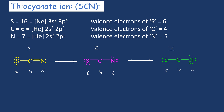Now let us assign the formal charges. For sulfur (reference: 6 valence electrons): canonical structure 1 gives 7, so −1; canonical structure 2 gives 6, so 0; canonical structure 3 gives 5, so +1. For carbon (reference: 4): all three canonical structures give 4, so the formal charge is 0 in all cases. For nitrogen (reference: 5): canonical structure 1 gives 5, so 0; canonical structure 2 gives 6, so −1; canonical structure 3 gives 7, which is 2 more than 5, so −2.